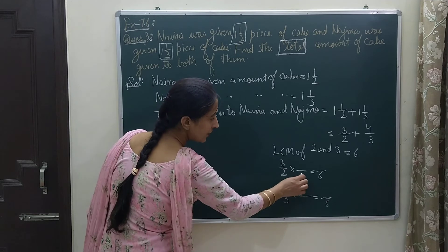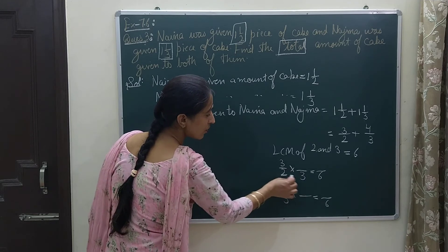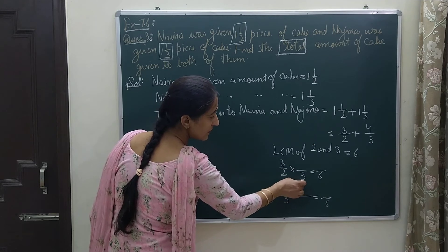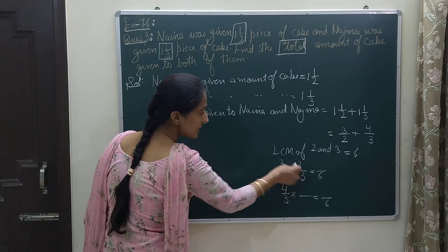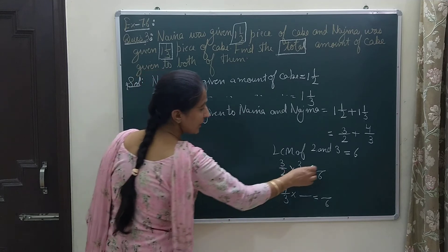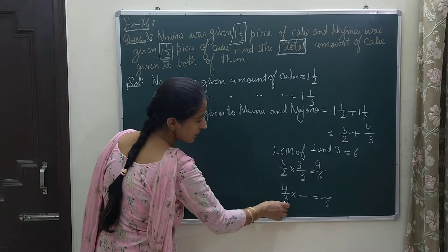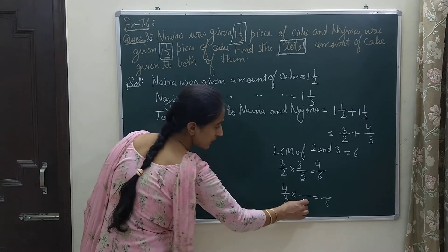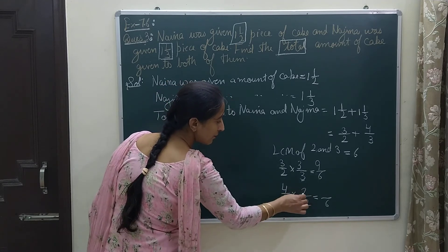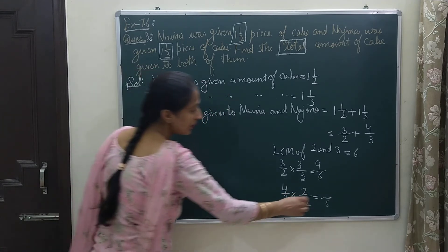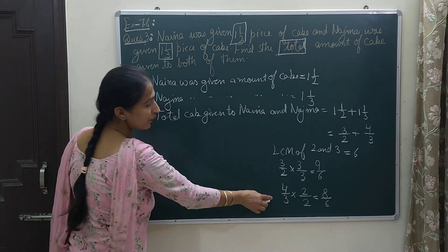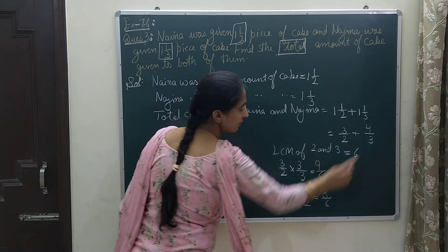Now which number should I write here so that this 2 multiplied by some number becomes 6? That number is 3 and same number I will write here. Now 3 times 3 is 9. Same way here which number should I fill so that the product becomes 6? That number is 2. Same number I will write here in the numerator and now new numerator is 8. So I have got two equivalent fractions for both the given fractions.